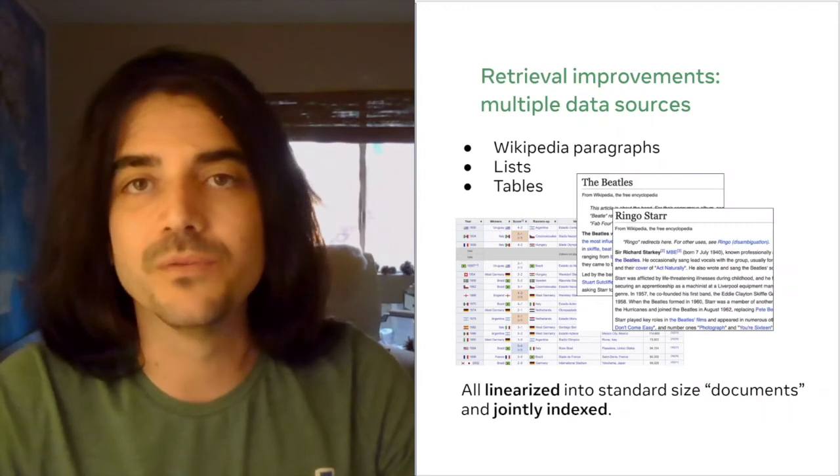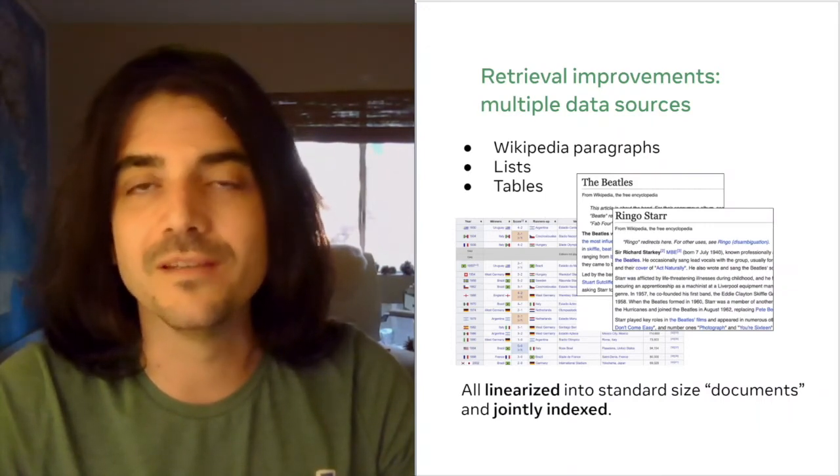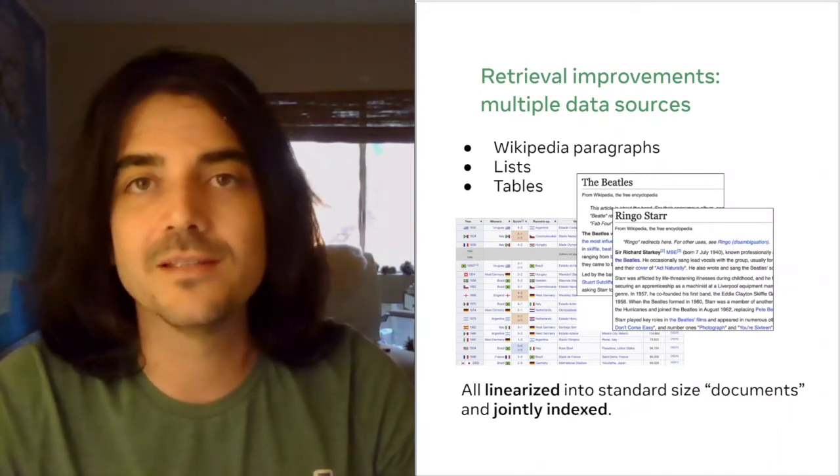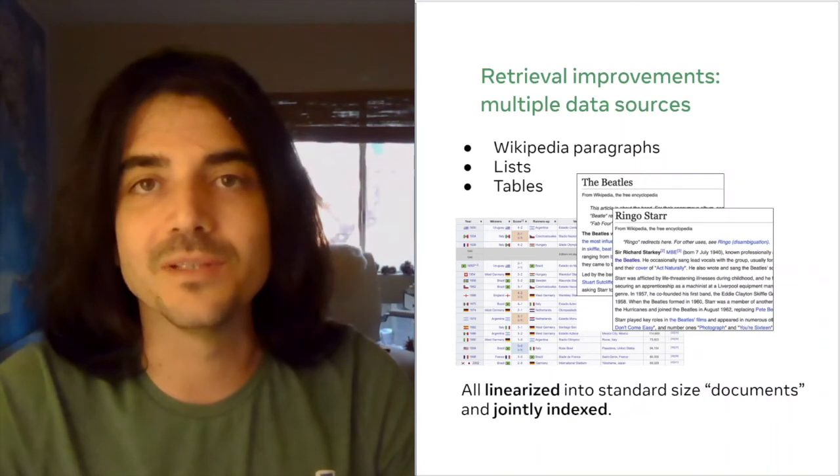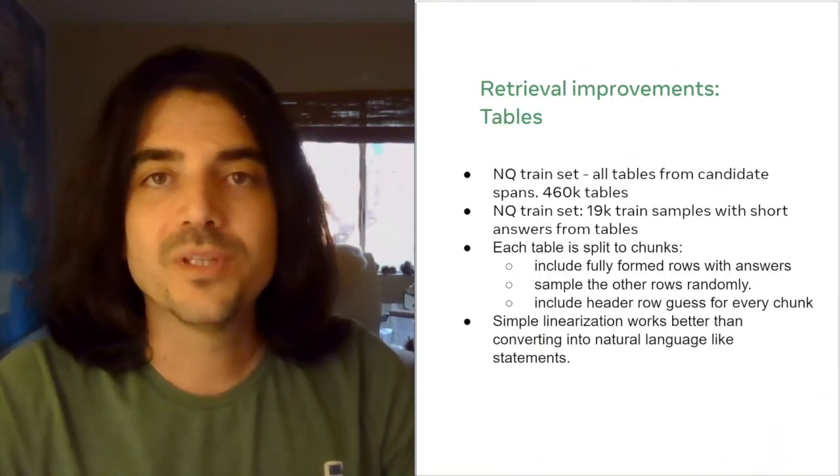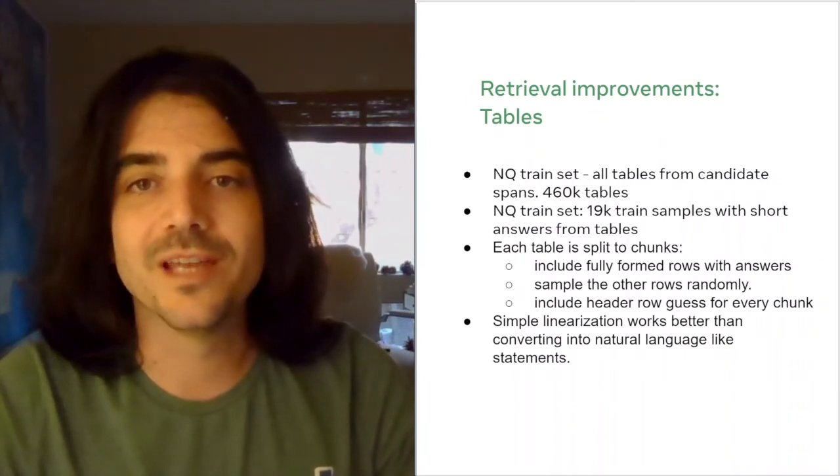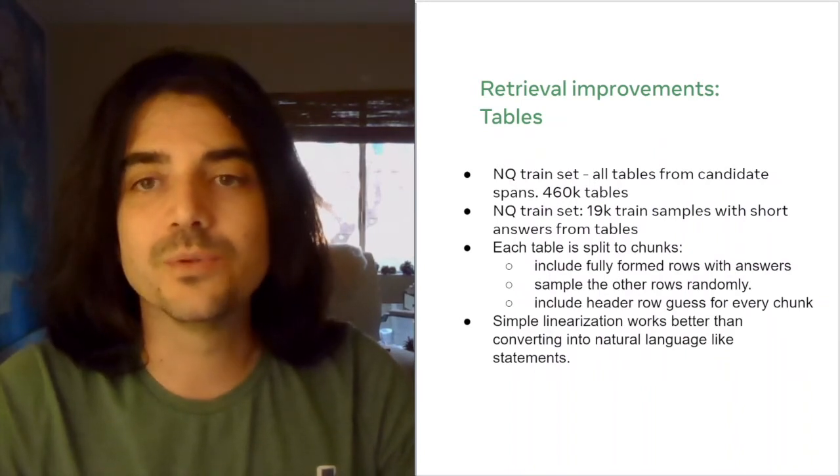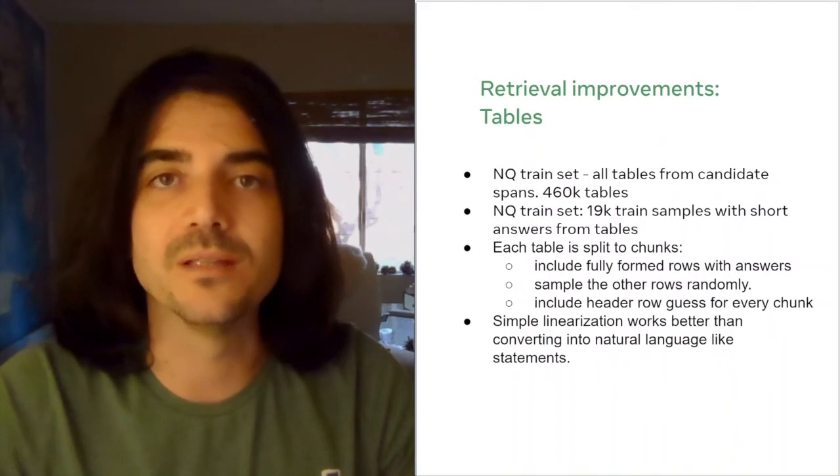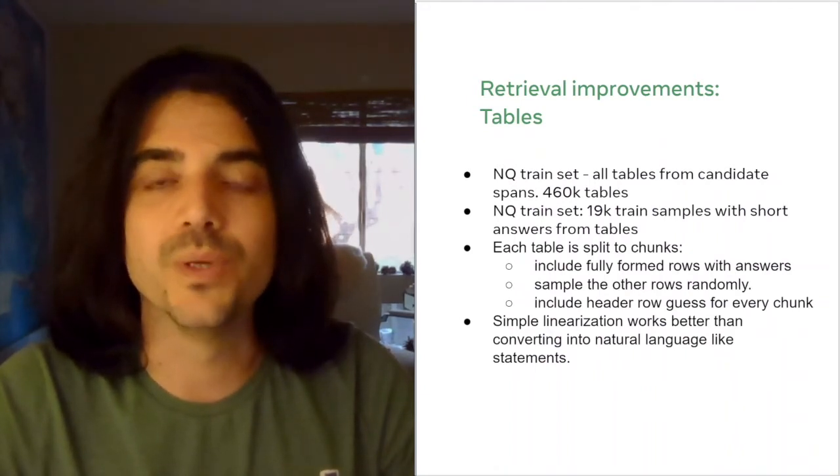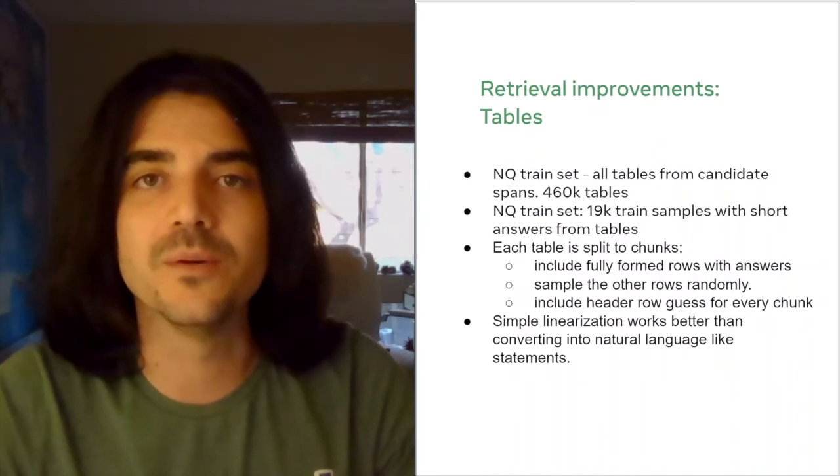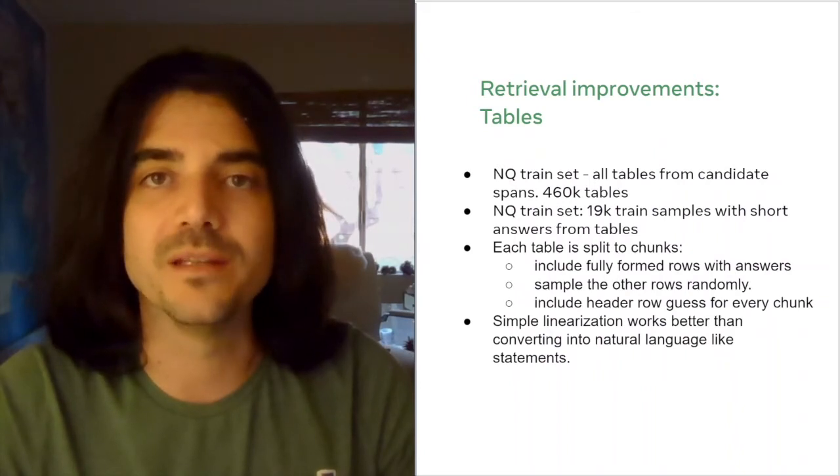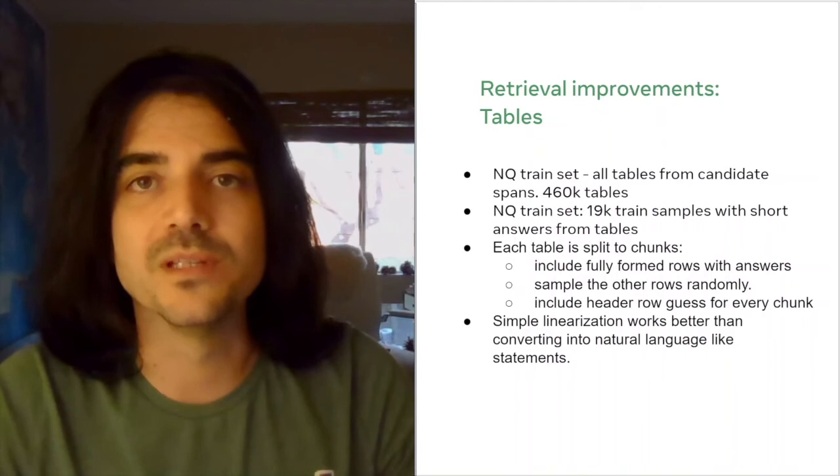We make several improvements to the retriever. Notably, we use several types of information in addition to just unstructured text, including lists and tables from Wikipedia. All of this is linearized into fixed-size documents and then jointly indexed with the rest of the passages. For tables, we have around half a million of them from the original natural questions training set. We also used around 20,000 training samples, which are short answers coming from tables. Each table is split into chunks. We try to include fully formed rows which contain the answers and also sample the rest of the rows randomly. Simple linearization schema work pretty well here, better than anything more complicated that we tried.